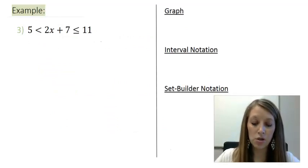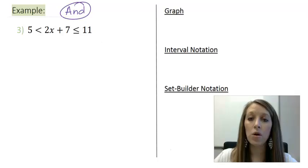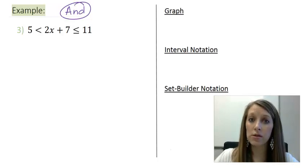5 is less than 2x plus 7 is less than or equal to 11. So if it's ever written like this then it is most definitely an and statement and you are looking for the overlap involved. There's two separate ways that you can solve this and statement and I will show you both ways. Let's start with the first way which mimics what we did in the last video.